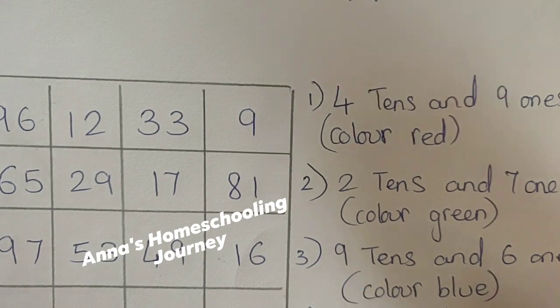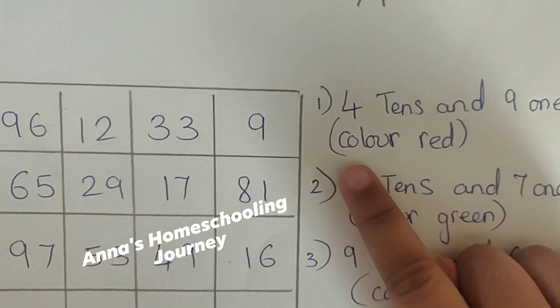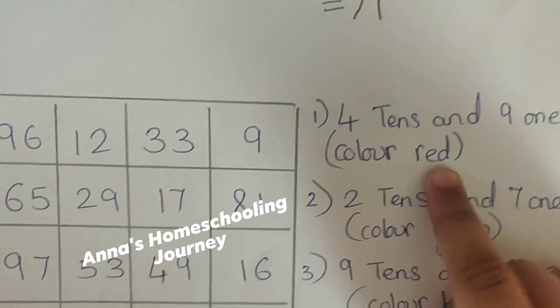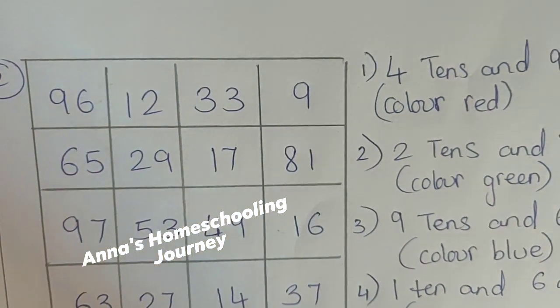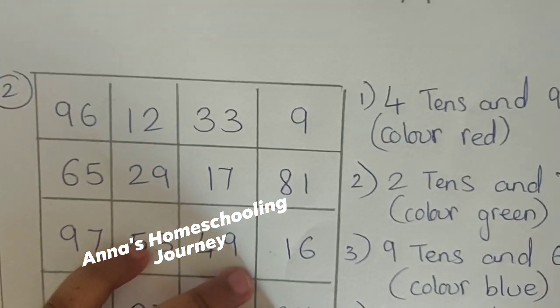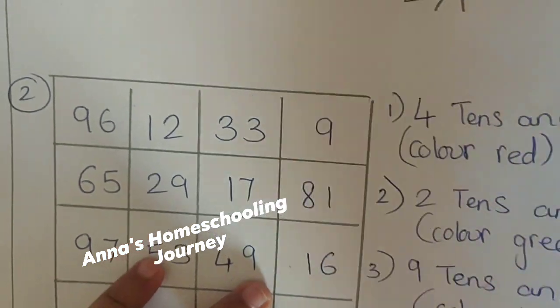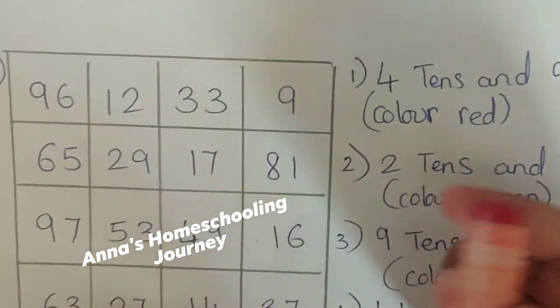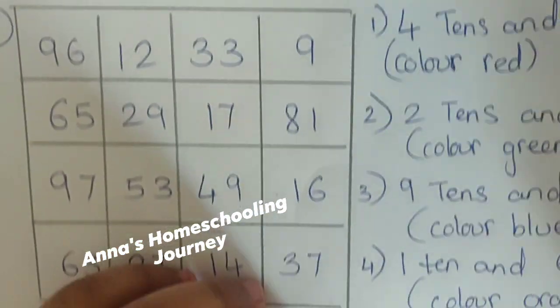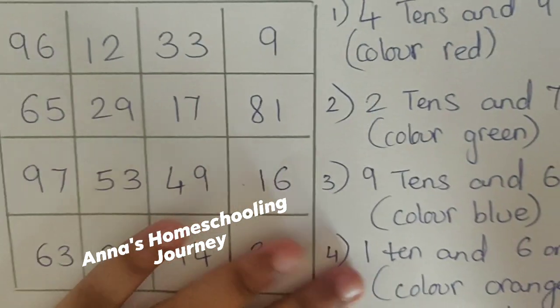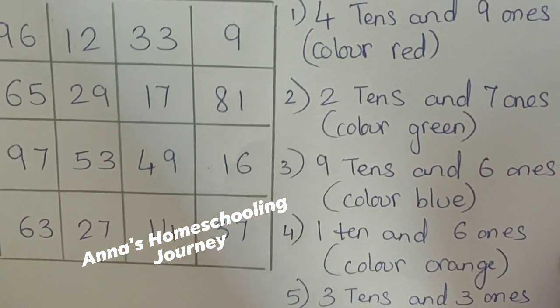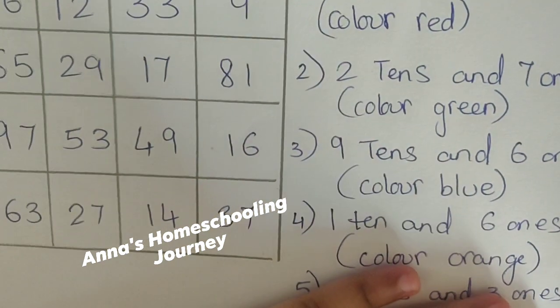The first one. First one you need to read. Color red. Very good. So, you need to color red. Then, okay. So 49 you have to color in red. Let's do one thing. You just do it orally and then you start coloring. Let's see the second one.